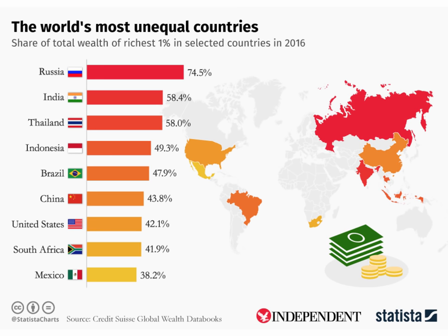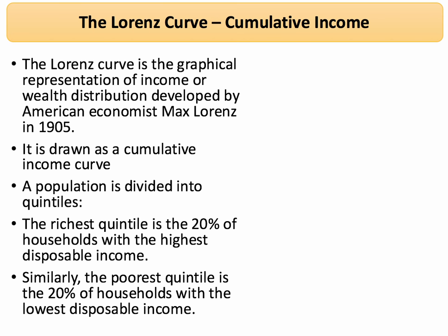It's the Lorenz curve which helps us visualize this information. The Lorenz curve is essentially a cumulative income curve — a simple graphical representation of either income or wealth inequality, developed over a hundred years ago by American economist Max Lorenz. What we do is divide the population up into groups.